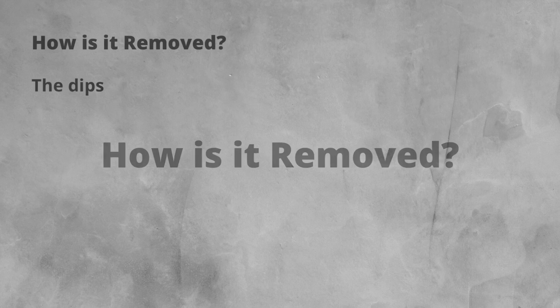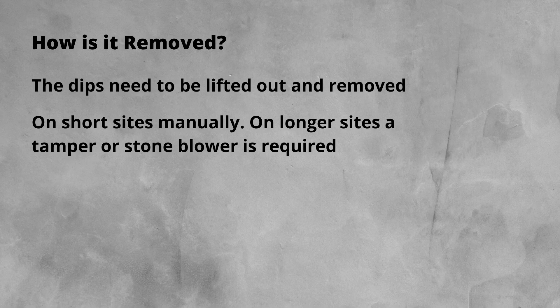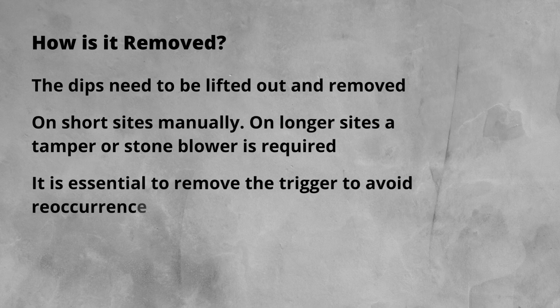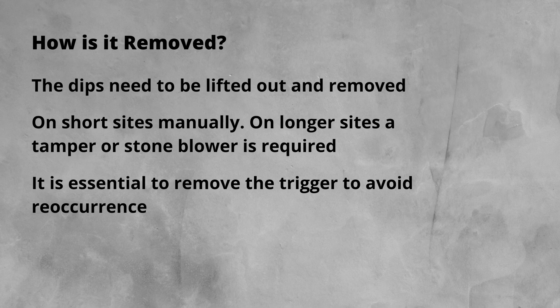So how is cyclic top removed? The repair of cyclic top involves lifting out and removing the dips. On short areas this can be done manually, but on longer sites a tamper or stone blower will be required. It is essential to remove the root cause of the cyclic top, the trigger. Removing the trigger avoids the cyclic top reforming.